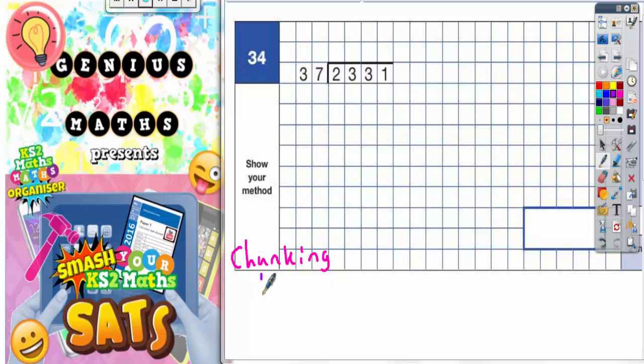We're going to need 1 lot of 37, 10 lots of 37, 100 lots of 37, 2 lots of 37, 20 lots of 37, 200 lots of 37, and one more which always comes in handy: 5 lots of 37.